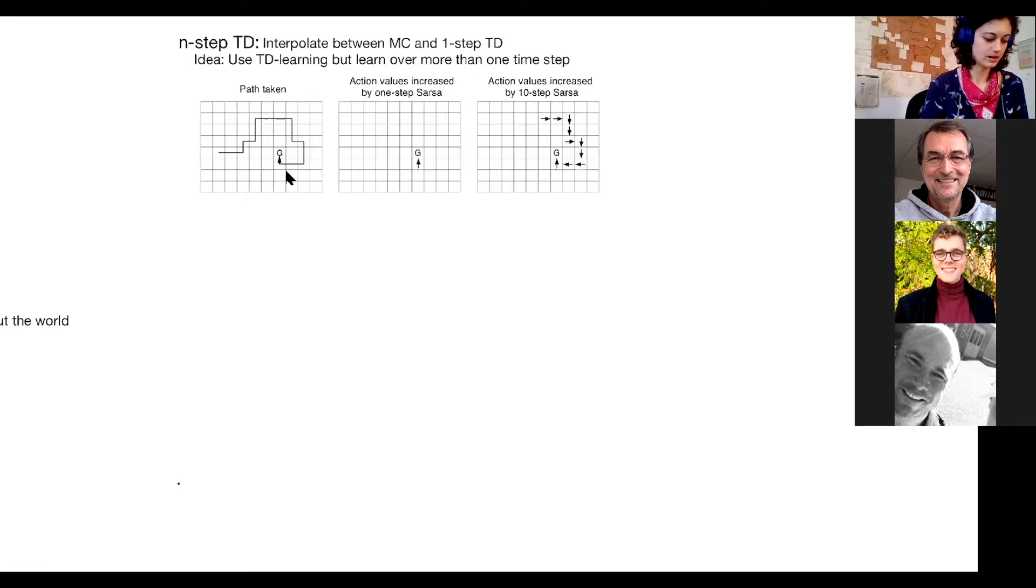But actually we want to learn something from the path we took before we got to that state before G, because usually that path before led to us getting to G. So we want to learn from that as well. And the idea is to learn over more than just one time step with TD learning. For example, if we take 10-step SARSA, we can update the 10 previous states before receiving this TD error.